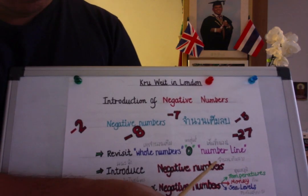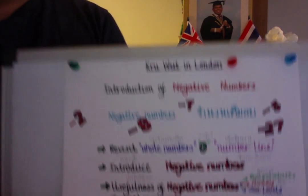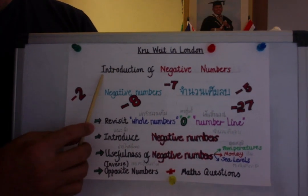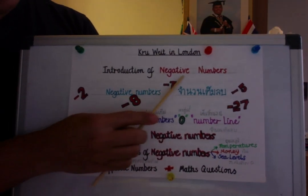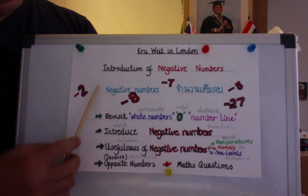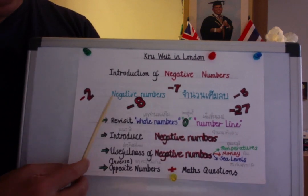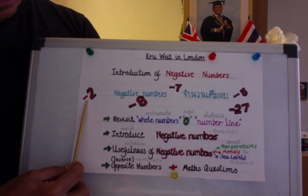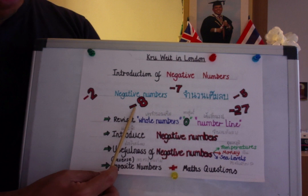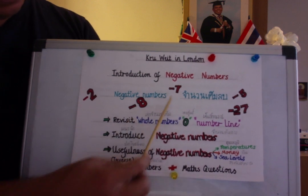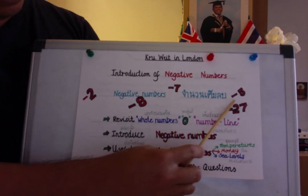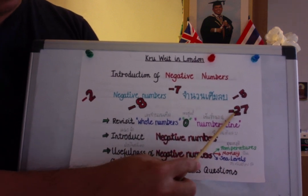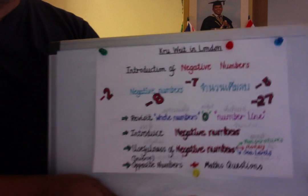Let me move this down to secure that. Introduction of negative numbers — an introduction to negative integers. For example: negative 2, negative 8, negative 7, negative 5, negative 27.